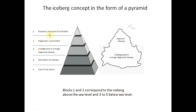Let's break down this iceberg. At the very tip you have disease diagnosed and controlled. Just below the waterline is disease diagnosed but uncontrolled — the patient knows they have the disease but is not on medication. Whatever is below the waterline is undiagnosed or wrongly diagnosed. Some may have risk factors; some may be exposed to diabetic-prone food items; and the majority at the very bottom are free of risk factors. As you go to the tip of the iceberg, you have more problems; as you go down, you are more likely to be healthy.